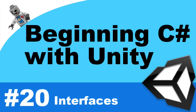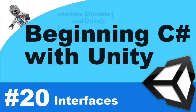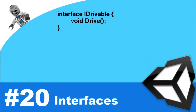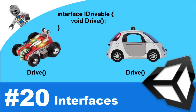For instance, you may have a protocol that defines a drivable characteristic, meaning this object can drive. It's not going to tell the object how it will drive, but it just states the object can drive. You can provide a protocol to an RC car versus a self-driving car — both of these objects now have in common that they can drive, but they're going to drive in very different ways. What we can do in an interface is define methods, properties, events, and indexers.